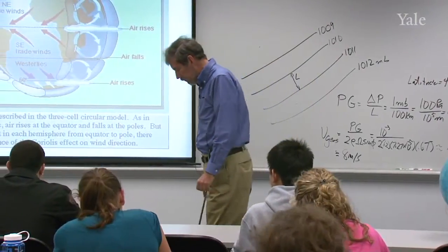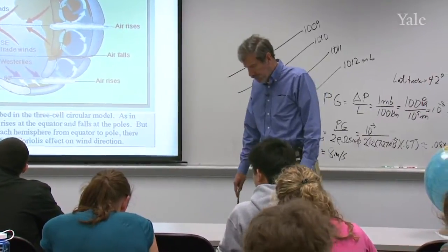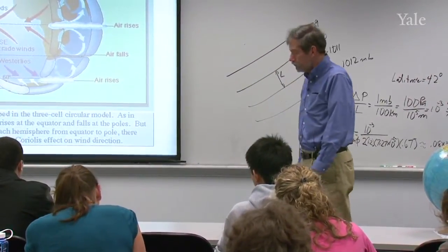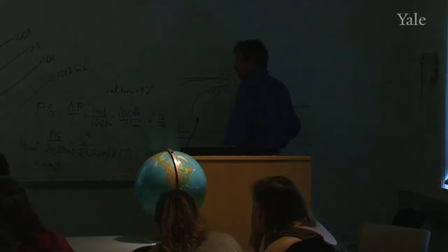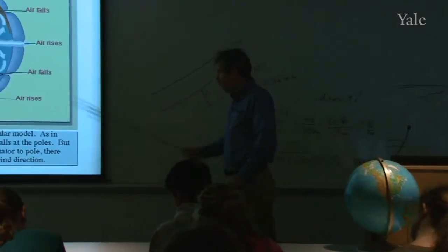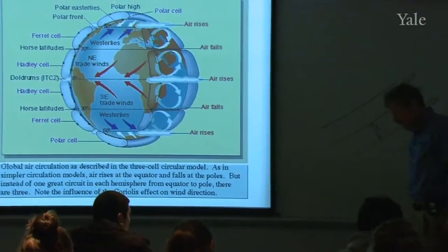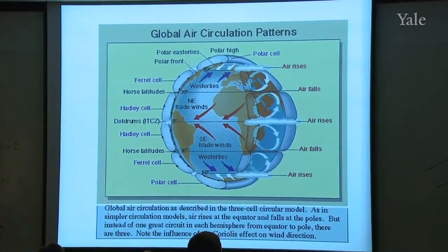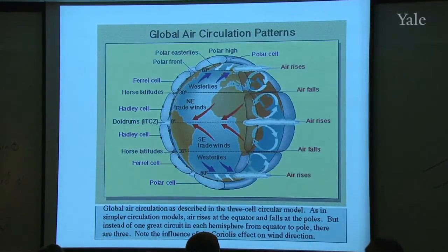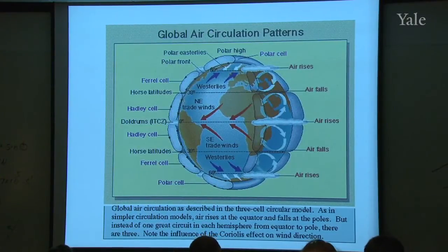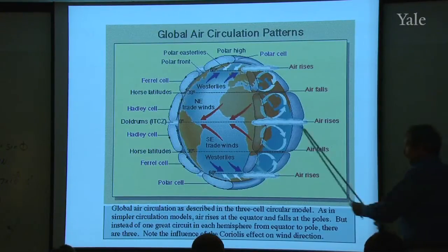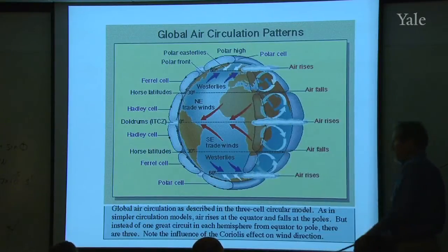We're talking about the general circulation of the atmosphere — a very important and very broad subject. I'm going to rehash a couple of things to get us started on today's lecture. Last time we reached the point of looking at a textbook cartoon outlining in simple form the three-cell circulation model for the Earth's atmosphere. In its most basic form, it's a simple problem: more heat goes in near the equator and more heat comes out near the pole, and the differential heating causes a circulation.